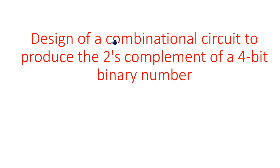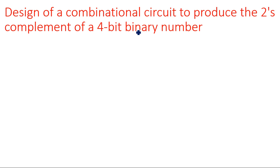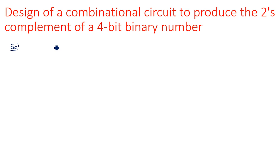In this video I am going to design a logic circuit for a combinational circuit to produce the 2's complement of a 4-bit binary number. The input is a 4-bit number and the output is also a 4-bit number, but the output is the 2's complement of the input. First we need to consider the truth table, then obtain expressions using K-maps, and then find the logic circuit diagram.